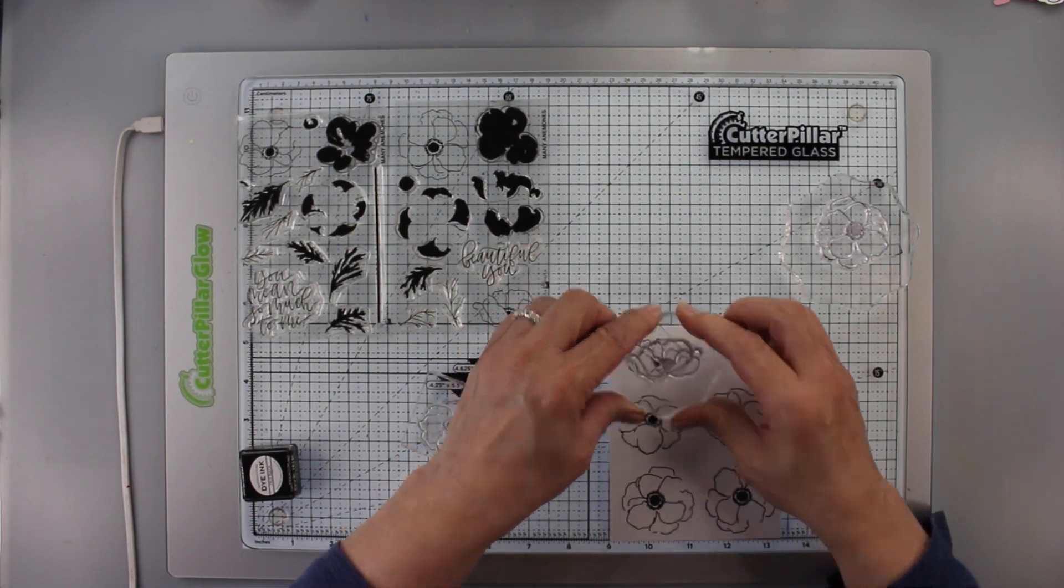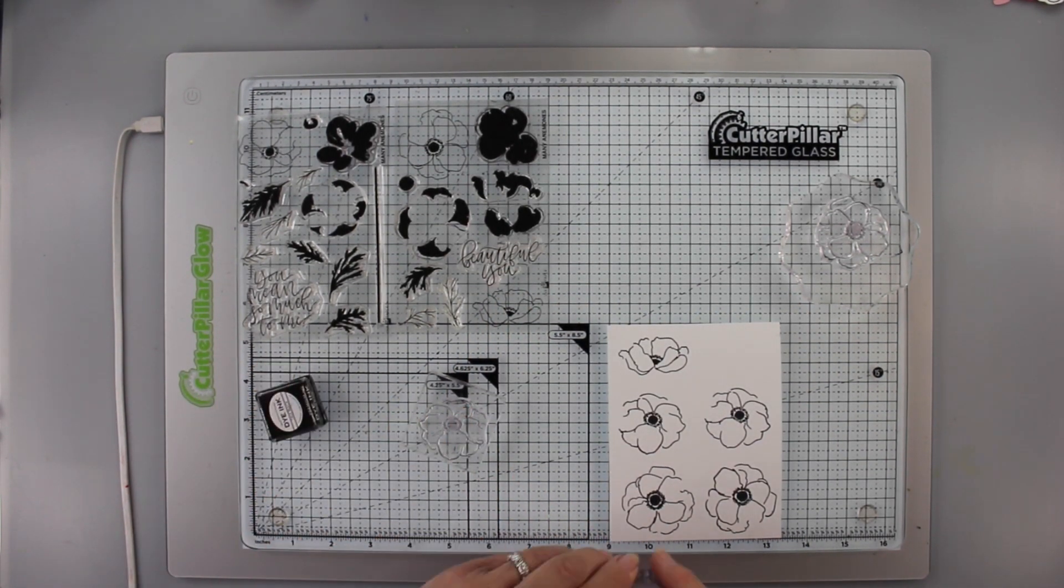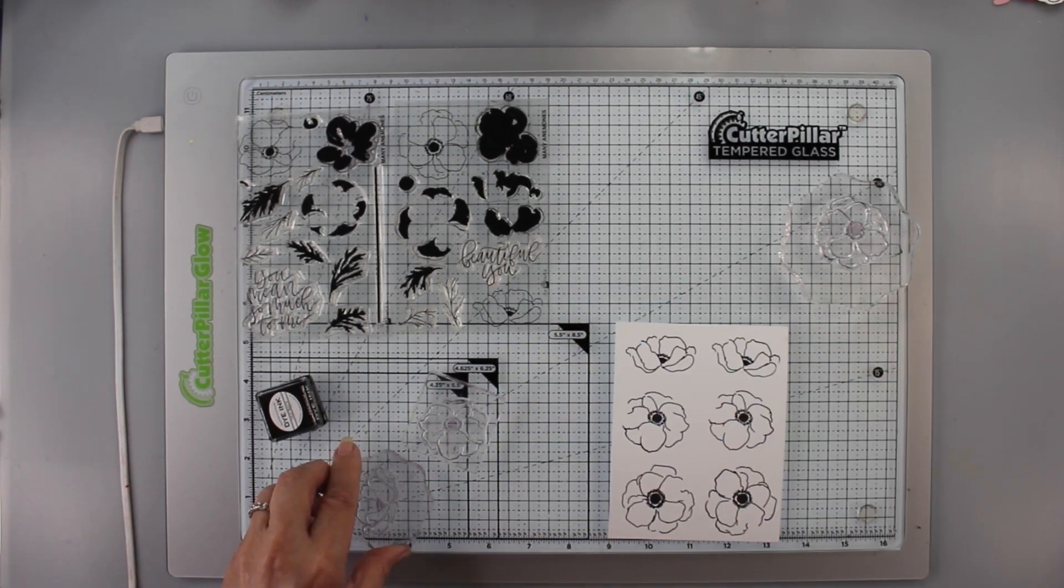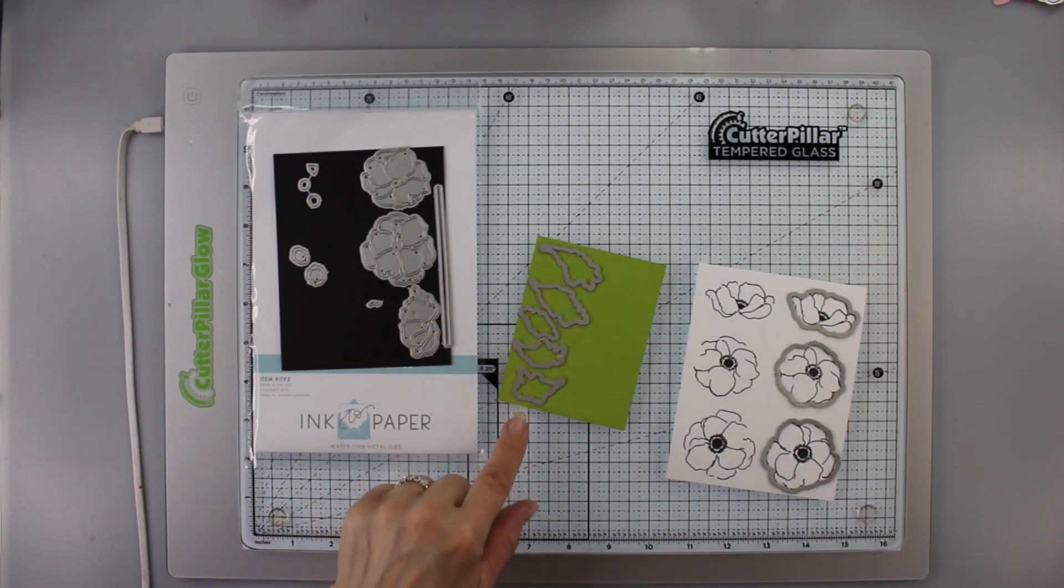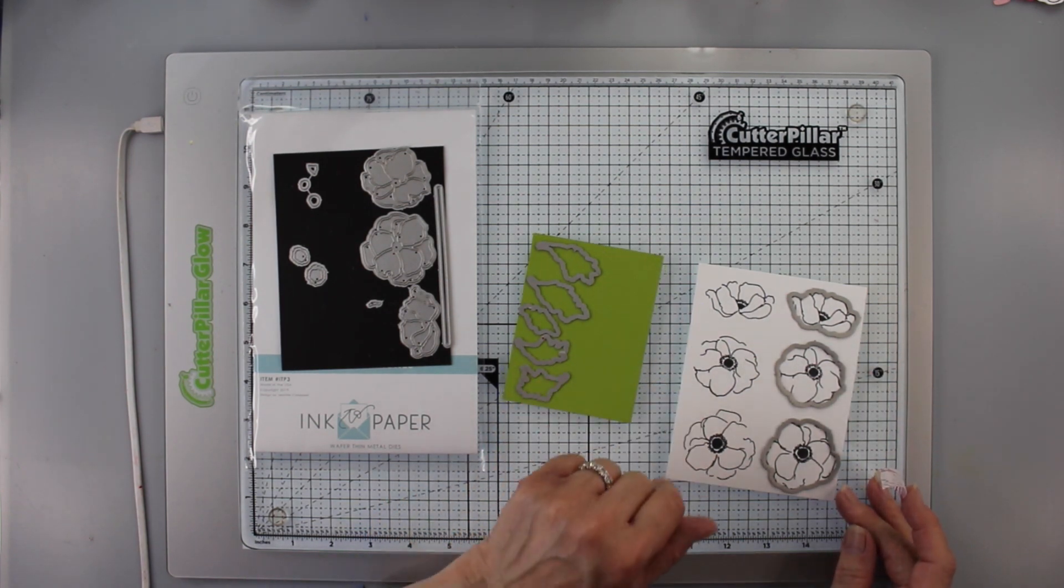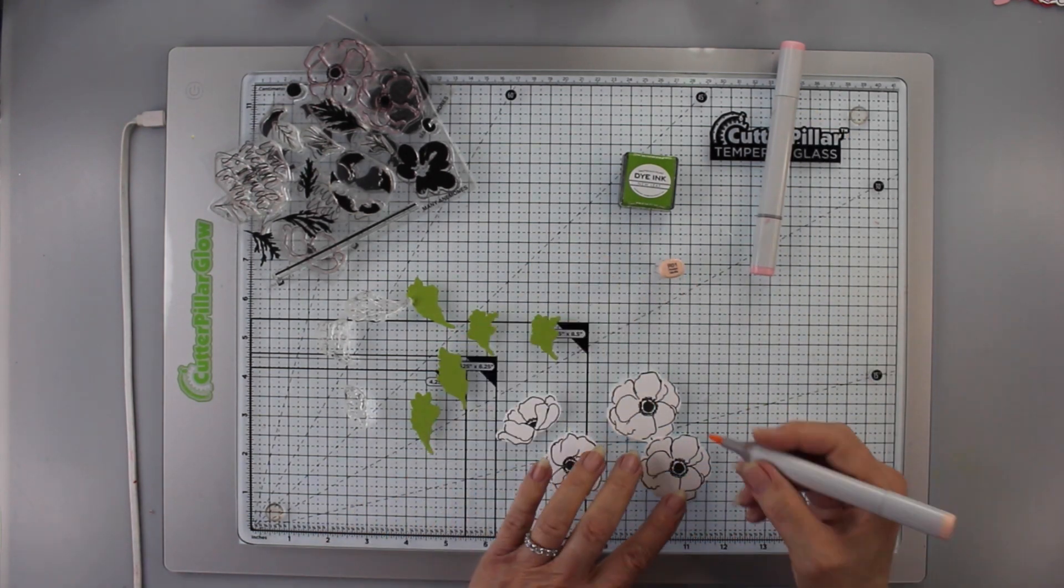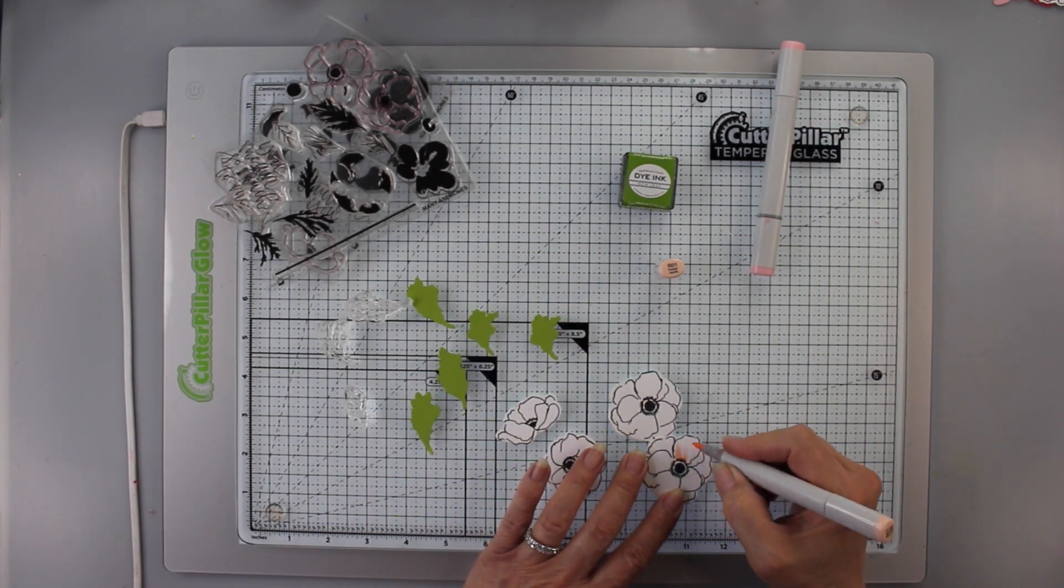And you know anemones have really great black centers to them and this ink really makes a beautiful black center. With those done then I'm going to cut them out with the matching dies and I'm also going to cut out the leaves using some green cardstock. And cut out all the different leaves and now I've decided I'm going to only use four of the flowers.